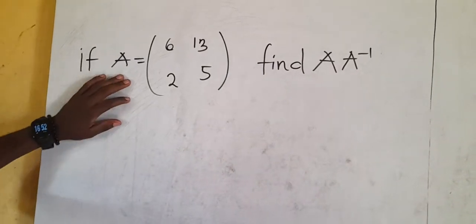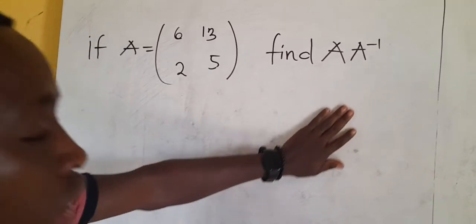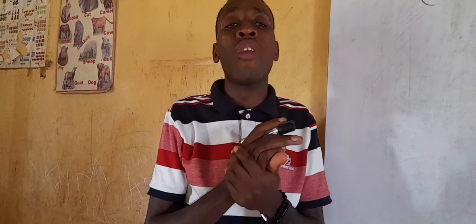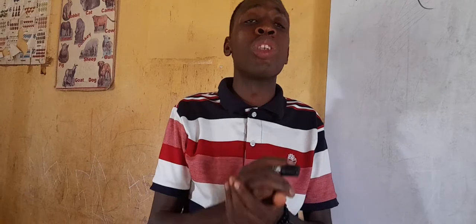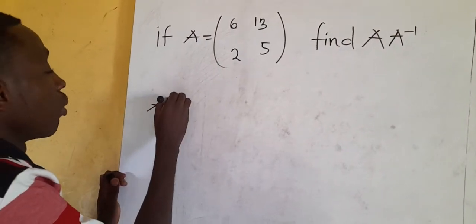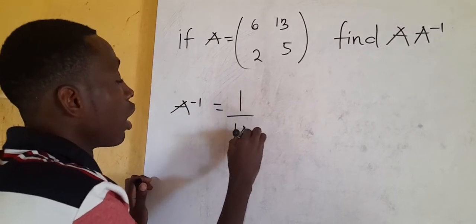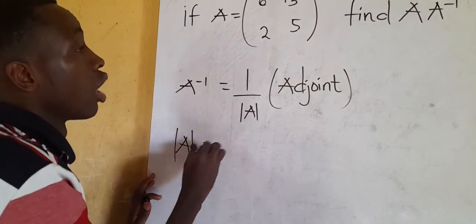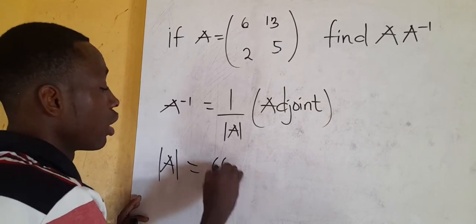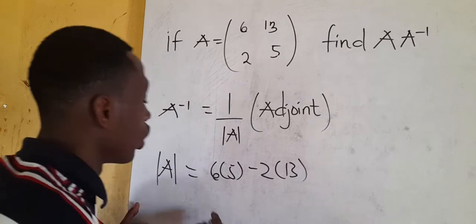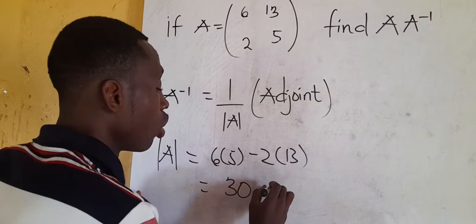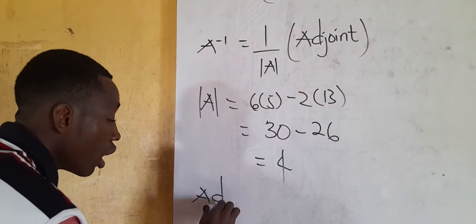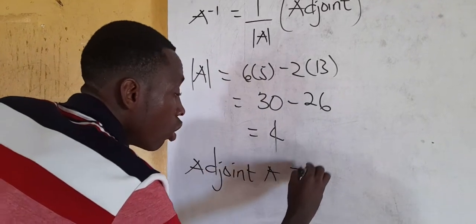We have another question: if matrix A equals [6, 13; 2, 5], find A times A inverse. First let's find the inverse. The determinant is 6×5 minus 2×13 = 30 minus 26 = 4. The adjoint of A: swap the principal diagonal and negate the off-diagonal, giving [5, -13; -2, 6].